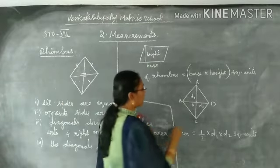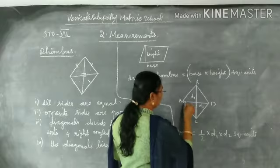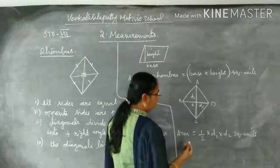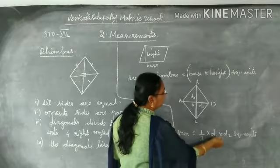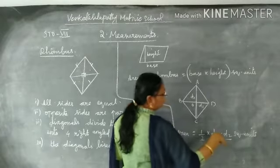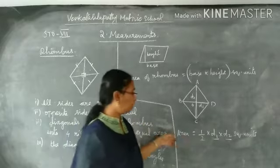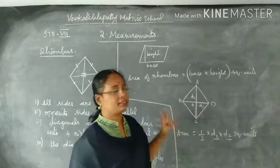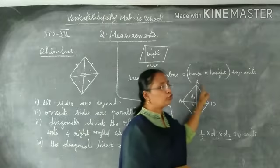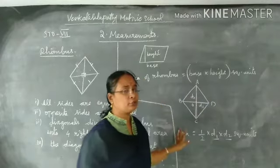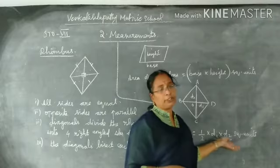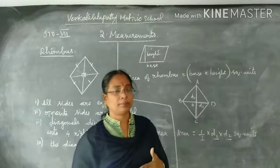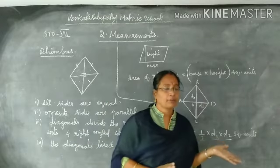Next, another formula using diagonals. Area of the rhombus is half into d1 into d2. D1 is the first diagonal, d2 is the another diagonal. Half into d1 into d2 square units. So two formulas: area is base into height square units, or area of the rhombus with diagonals is half into d1 into d2.